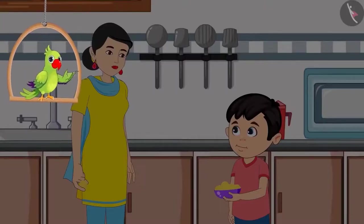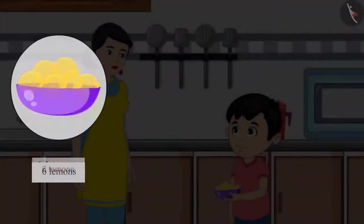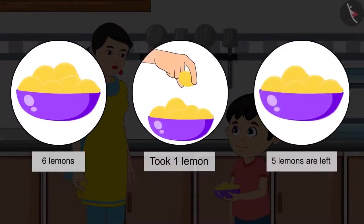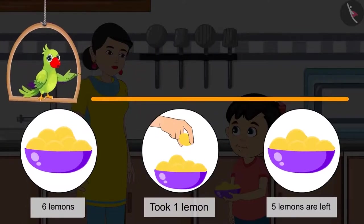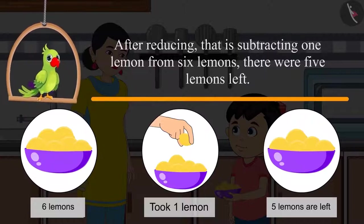So, children, can you tell me how many lemons did Chotu keep back in the fridge? Come on, let's see. If out of the six lemons Chotu's mother took one lemon, then there are five lemons left. Did you see how after subtracting one lemon from six lemons, there were five lemons left?